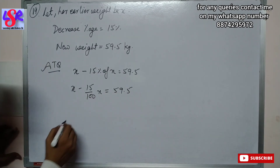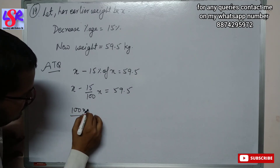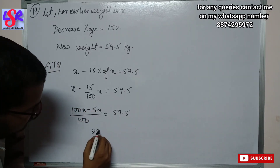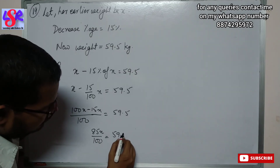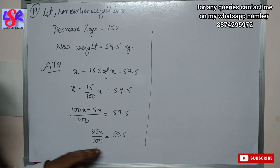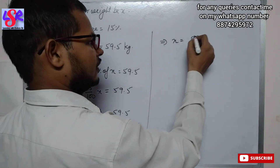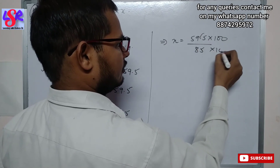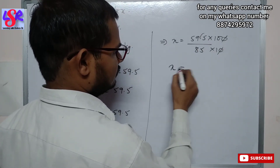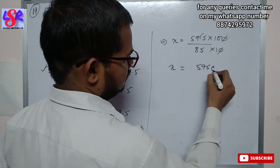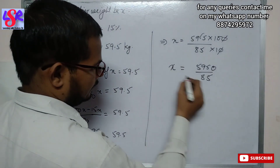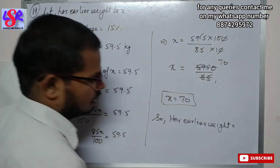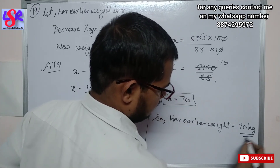Taking LCM as 100, we get 100x minus 15x equals 59.5. So 85x upon 100 equals 59.5. Solving for x: x equals 59.5 into 100 upon 85. Removing the decimal, we multiply by 10, giving 595 upon 85, and this equals 70. So her earlier weight equals 70 kg as the answer.